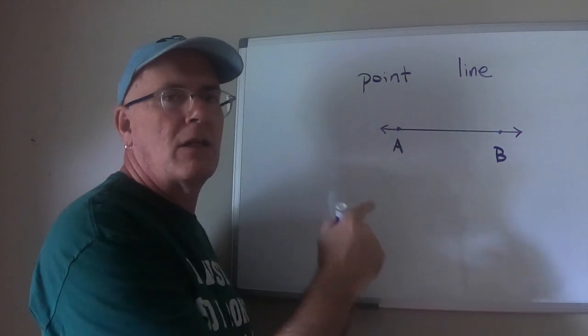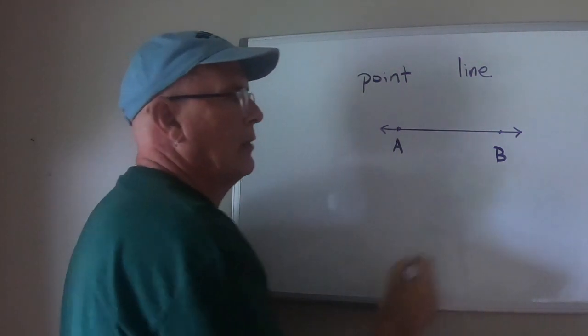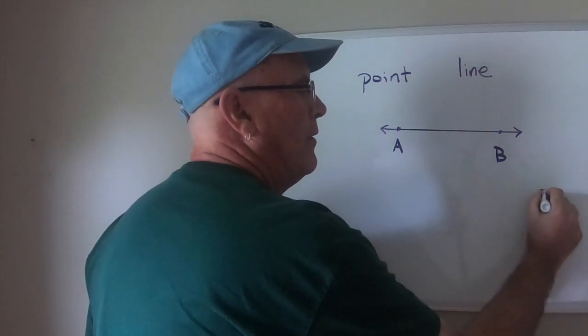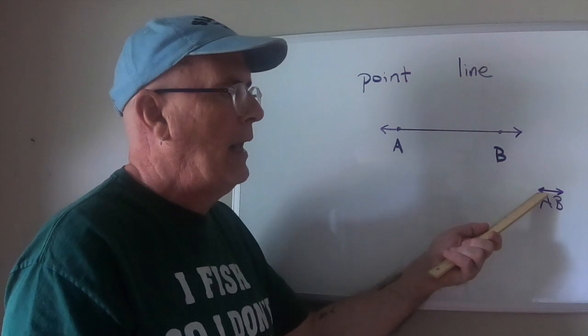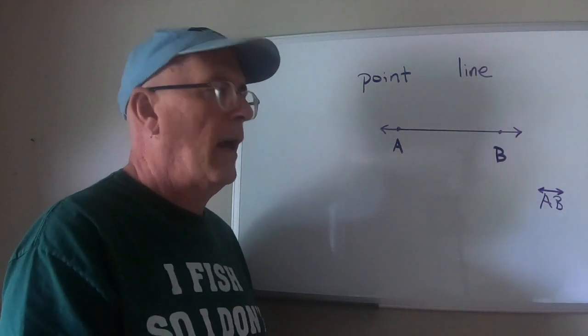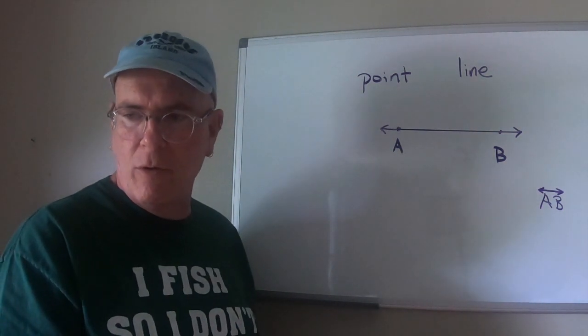So you could call this line A, B and that's exactly what we call it and we write it like this. You write an A and a B and then you write a line above it and the line has arrows on both sides to indicate that it's a line. I know that you guys, most of you already know this, but it's good to review these things.